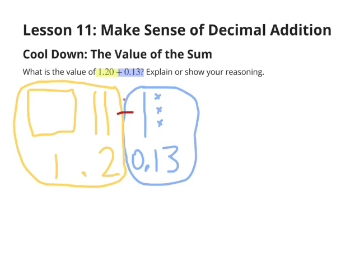If I were to combine the base ten blocks together, what I would find is that I would have one in the ones place. I would have one flat, which again is that ten by ten array of hundreds.